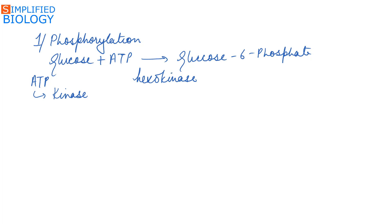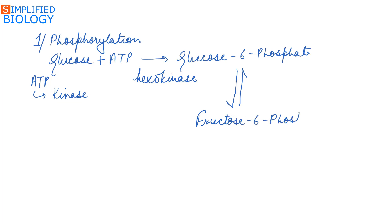Glucose 6-phosphate is then converted into its isomer, fructose 6-phosphate. The enzyme used here is isomerase.